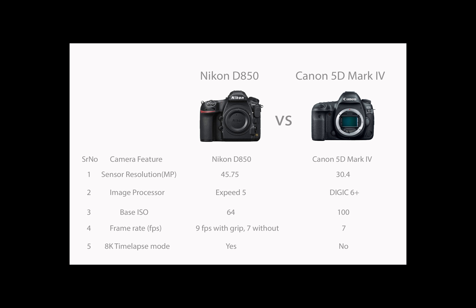You can shoot 8K time-lapse in-camera with the D850. That's huge! It's a unique feature that a camera company has launched for the first time with a DSLR camera.